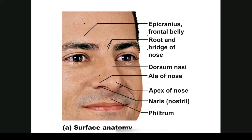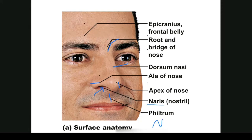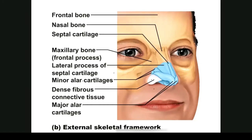Here's some nose anatomy. We have the root and bridge of the nose, dorsum, ala nasi, apex of the nose, and philtrum. The nose holes are called nares — N-A-R-E-S — which is the plural form. This view shows the underneath structures: the nasal bone and lateral septal cartilage. The major septal cartilage goes down the middle and divides the nose into halves. We also have alar cartilages, major and minor.